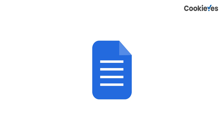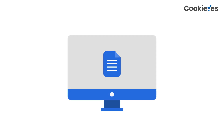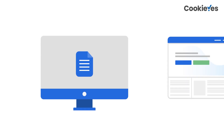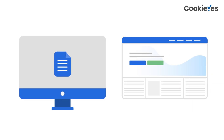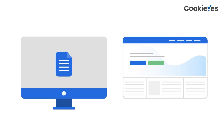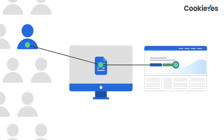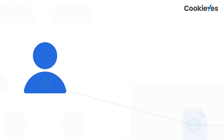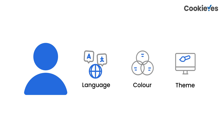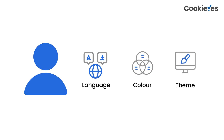Cookies are small text files that websites store on a user's computer or device. They contain data about the user's interaction with the website and help the website recognize the user and remember their preferences, like language, color theme, etc.